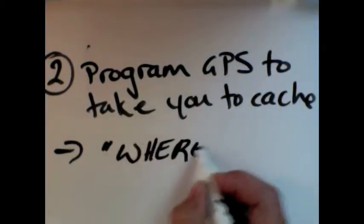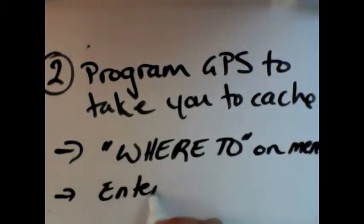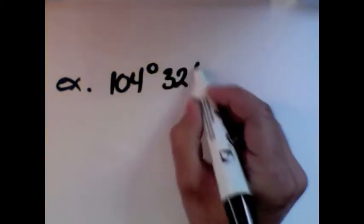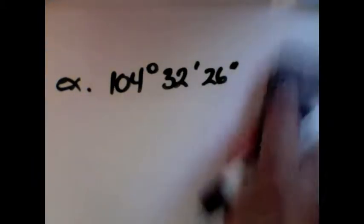The way you do it with these receivers is there's a 'where to' app on the menu, and you just enter the coordinates that you get from the internet, and then you just navigate yourself. The coordinates could look something like this, and you just punch them in.